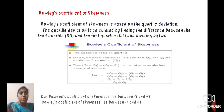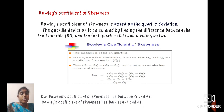Next, we define Bowley's coefficient of skewness, which is based on quartile deviation. The quartile deviation is calculated by finding the difference between the third quartile and the first quartile and dividing by 2. Karl Pearson coefficient of skewness lies between minus 3 and plus 3, while Bowley's coefficient of skewness lies between minus 1 and plus 1. Bowley's coefficient SKQ equals Q3 minus Q2 minus (Q2 minus Q1) divided by (Q3 minus Q2) plus (Q2 minus Q1), which equals Q3 plus Q1 minus 2Q2 divided by Q3 minus Q1.